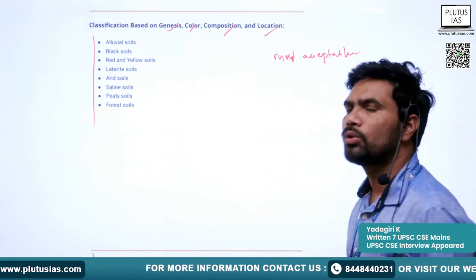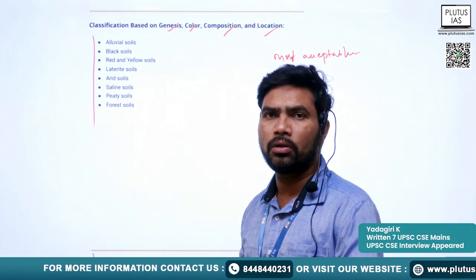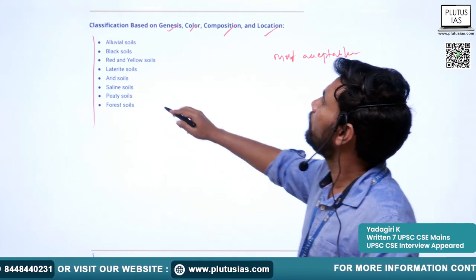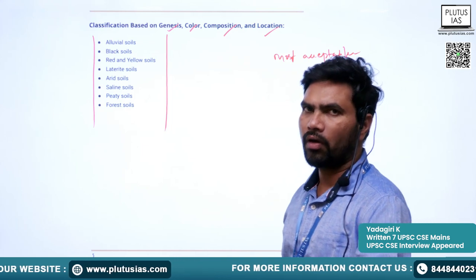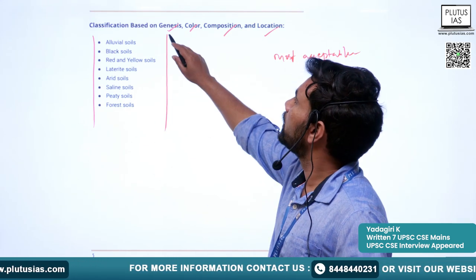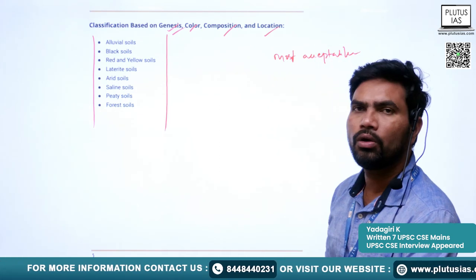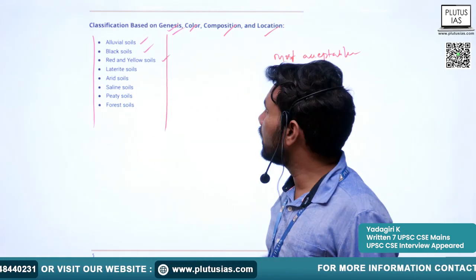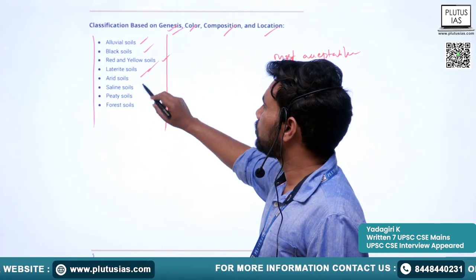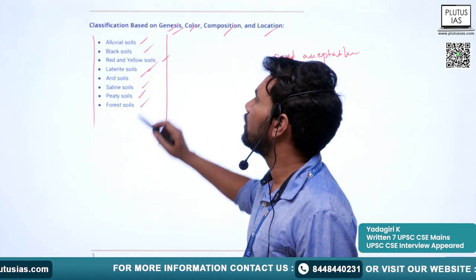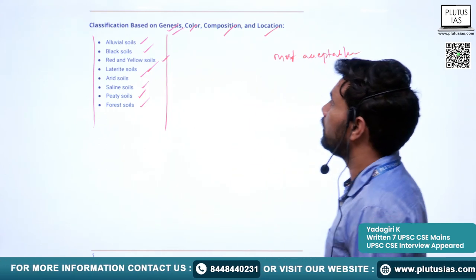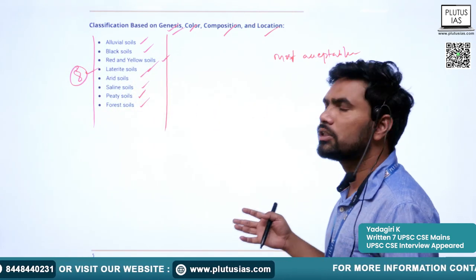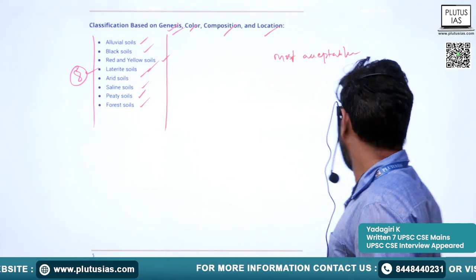For academic and agricultural extension purposes, the most accepted classification is based on genesis or origin, color, composition, and location of the soil. The soil types under this classification are: alluvial soils, black soils, red and yellow soils, laterite soil, arid soils, saline soils, peat soils, and forest soils — eight types in total.